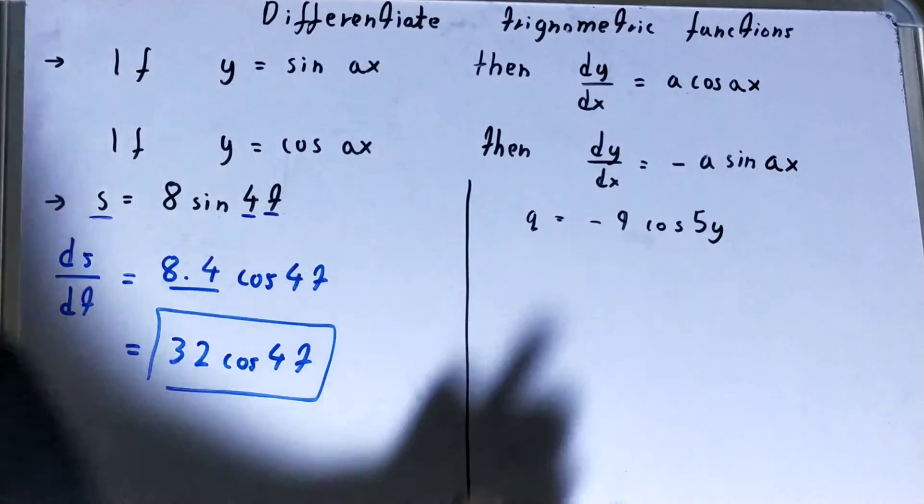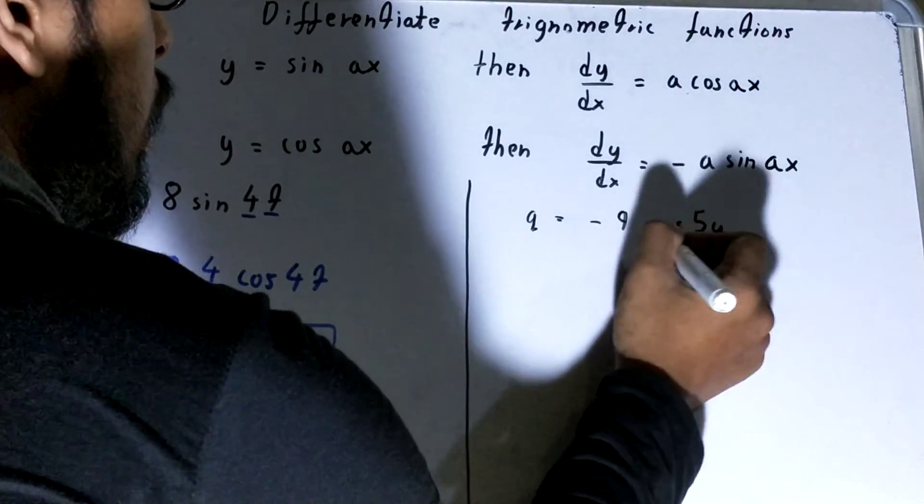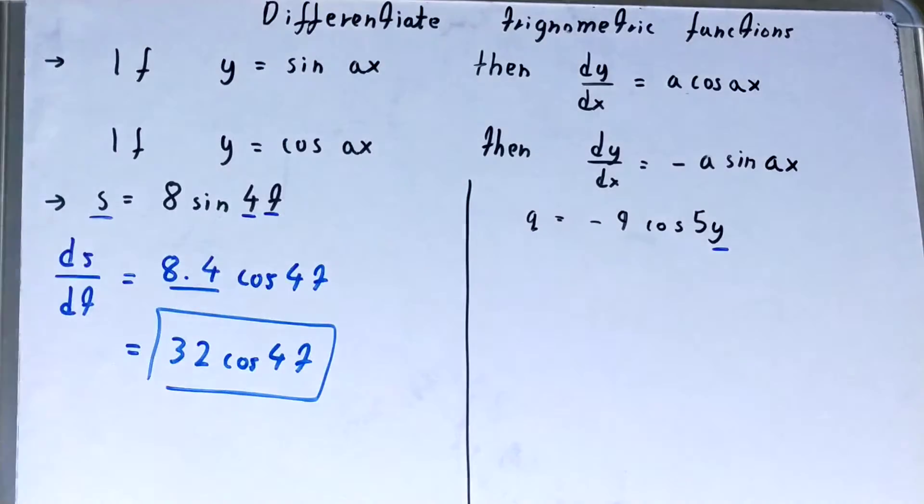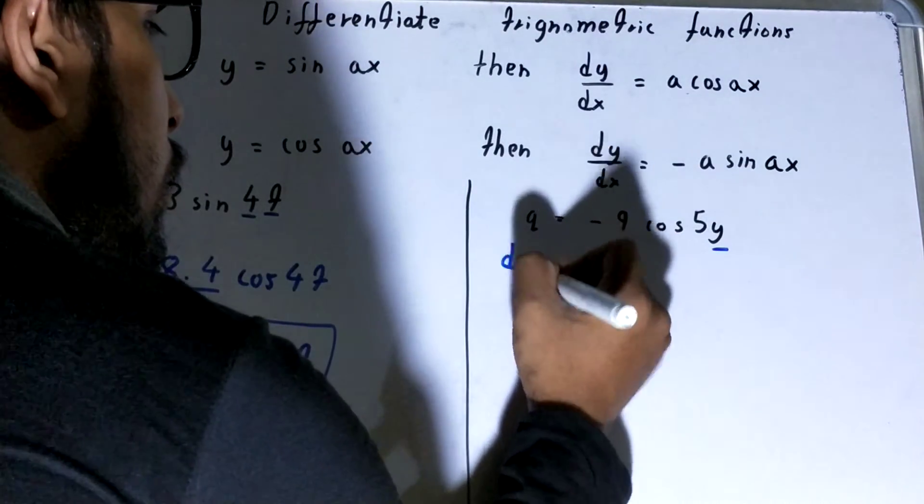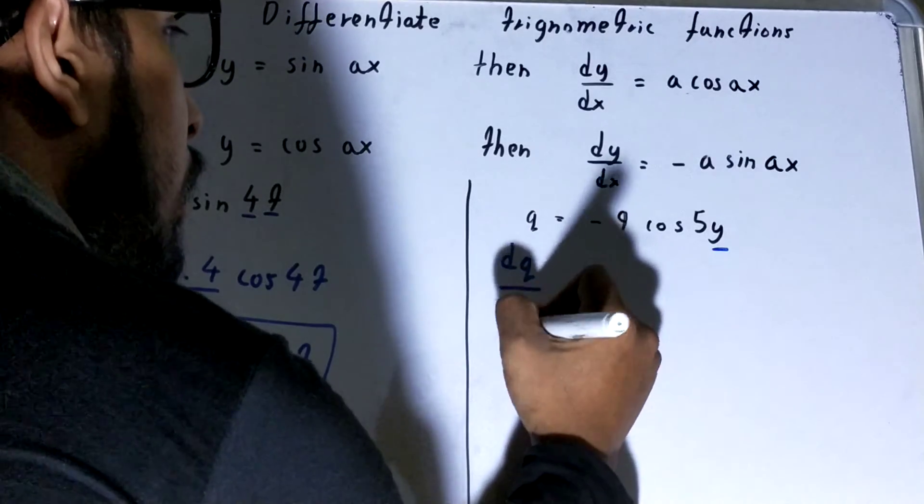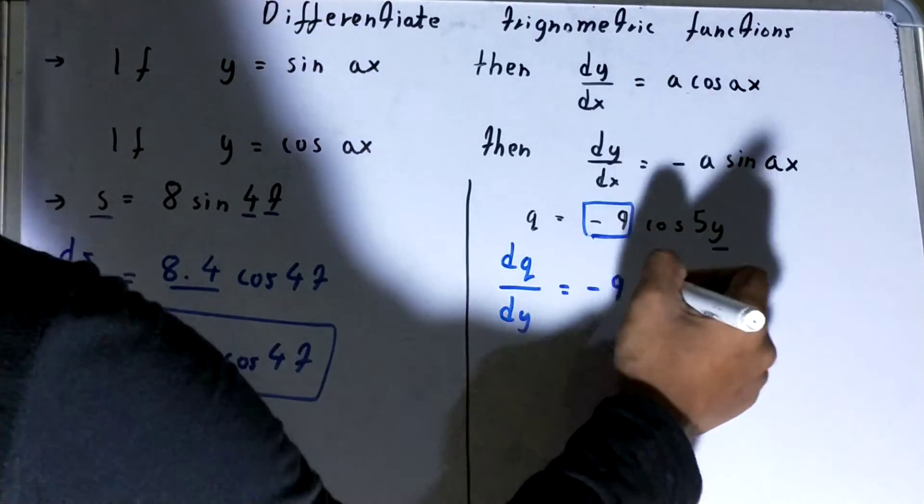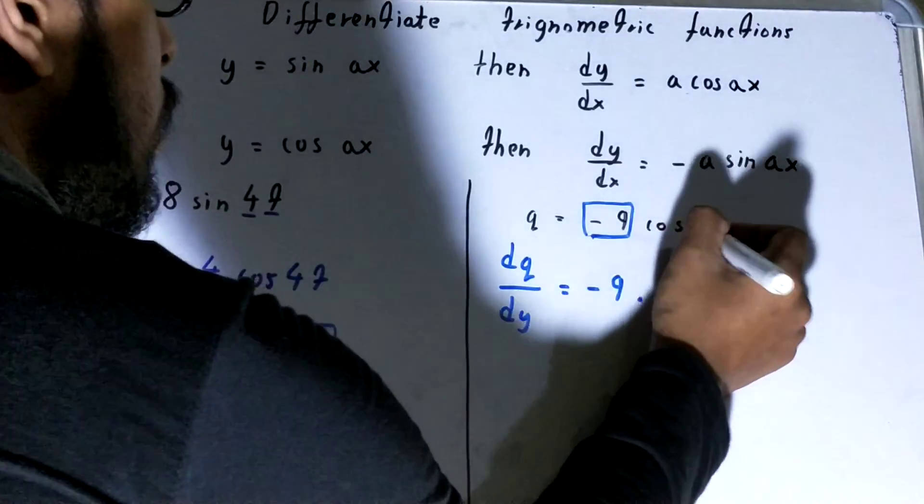So this was about the differentiation of sine ax. Now let's see the differentiation of cos ax. We have a question over here as q, and q will be differentiated in terms of y because we are having the variable y. So we'll write dq upon dy. Again, the coefficient, write it like this, don't touch it.